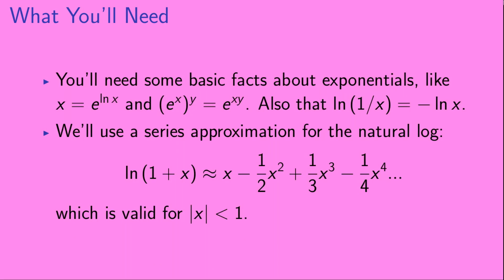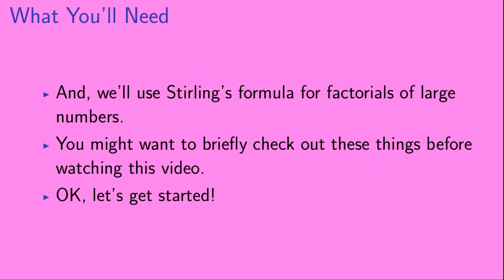You're also going to need some basic facts about exponentials, like the fact that x equals e raised to the power of the natural log of x, and that e to the x raised to the y power is equal to e to the xy. You're also going to need to know that the natural log of 1 over x is equal to minus the natural log of x. Additionally, we're going to use a series approximation for the natural log: the log of 1 plus x is approximately equal to x minus one-half x squared plus one-third x cubed, etc. That approximation is valid as long as the absolute value of x is less than 1. We're also going to use Stirling's formula for factorials of large numbers.